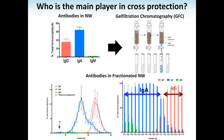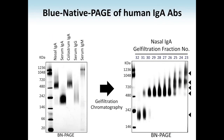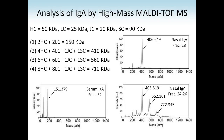We separated the nasal wash antibodies by size using gel filtration chromatography into fractions. As you see in the lower left figure, there are two peaks: the red peaks correspond to the monomeric IgG antibody, and the blue peaks correspond to the IgA antibodies. We performed native PAGE for each fraction. The right figure shows fraction 32-31 containing monomeric IgA antibody, and fractions 26 to 30 containing the dimeric form of IgA. We also observed larger bands in fractions 23 through 26. To further analyze this, we characterized the molecular weight of these antibodies.